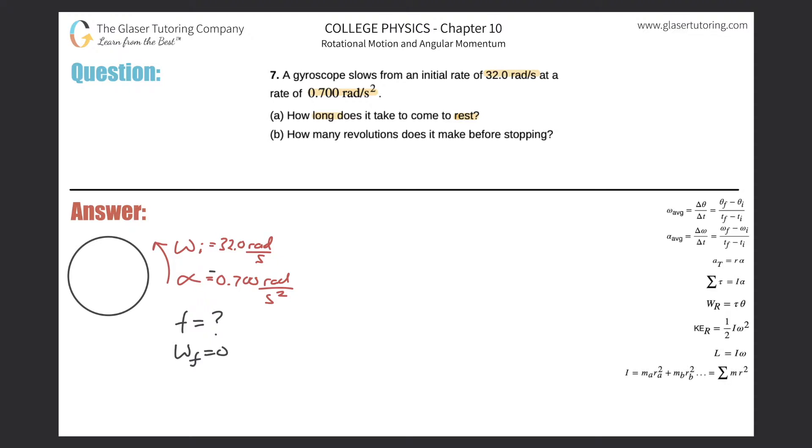Just think about your linear kinematic analogs. This is like initial velocity, this is your acceleration, you're trying to find time, and this is your final velocity. What equation of kinematics do you know relates these four variables?